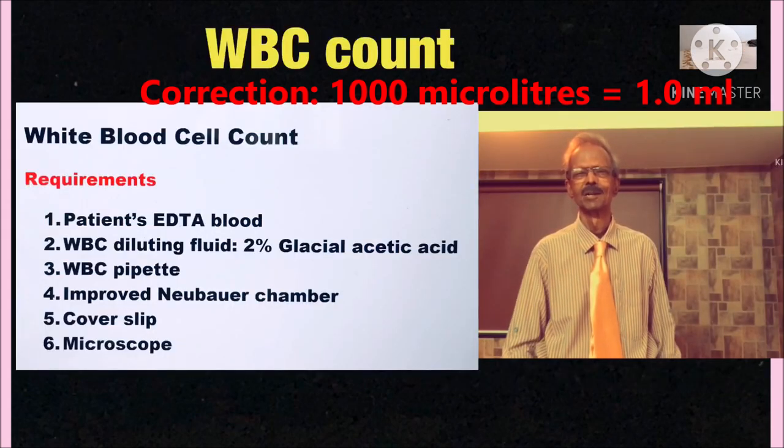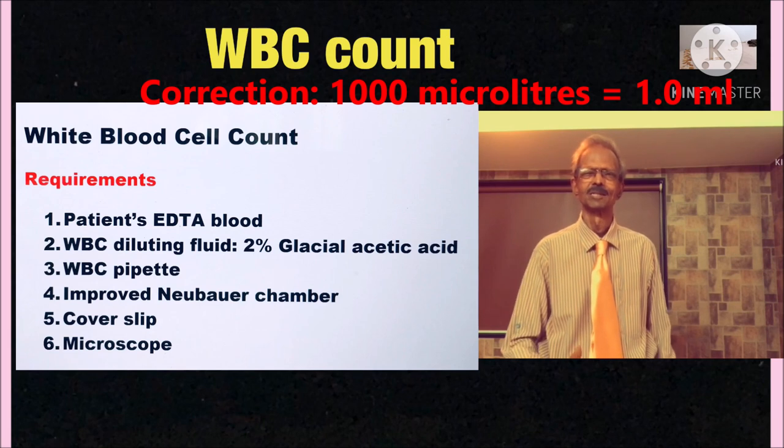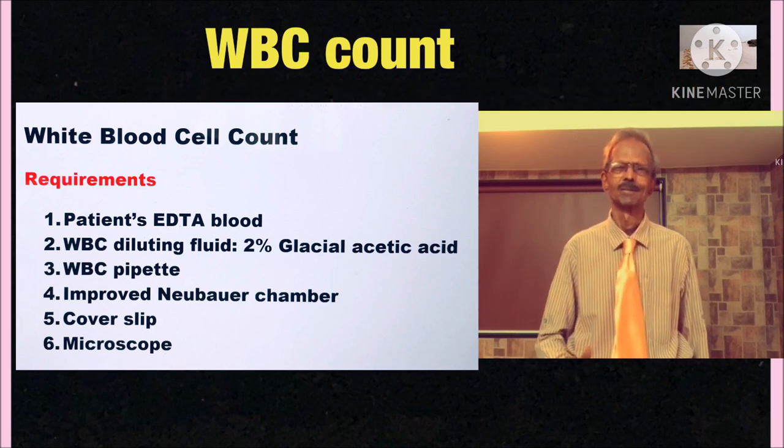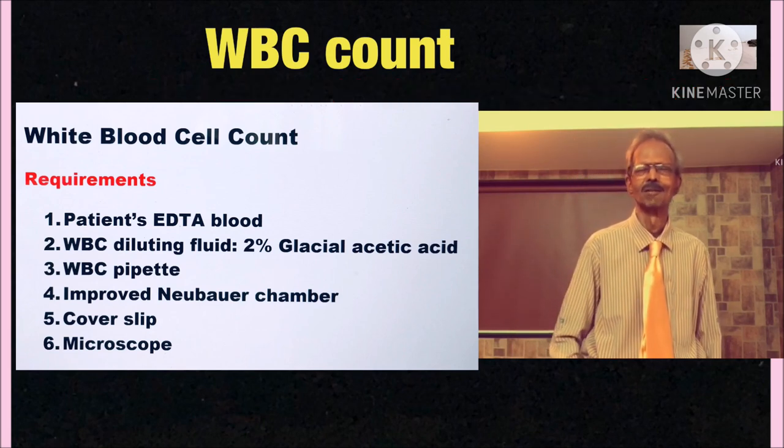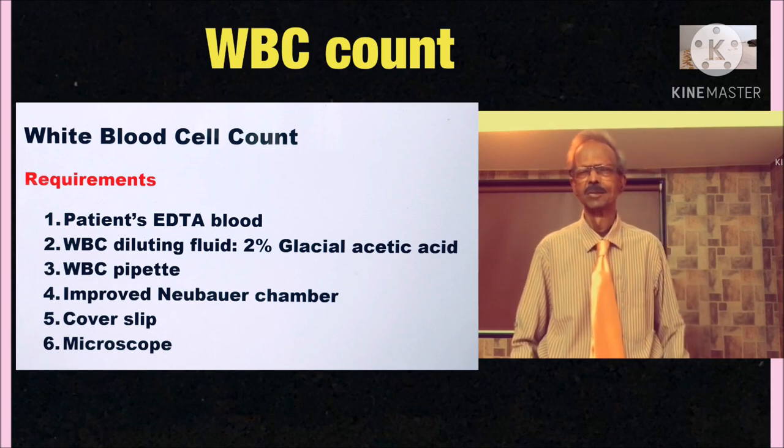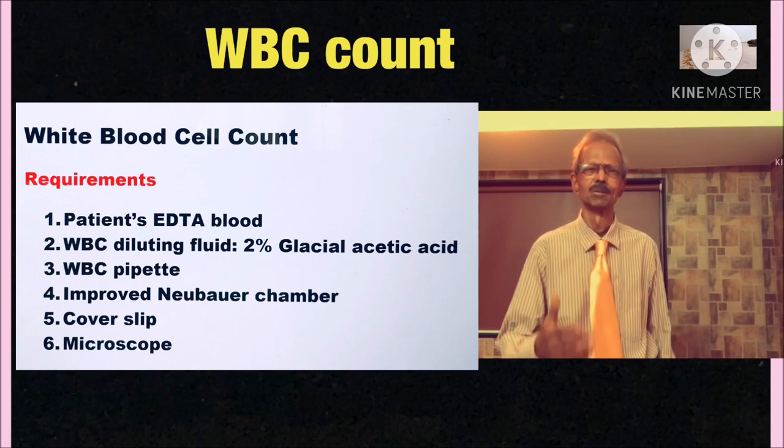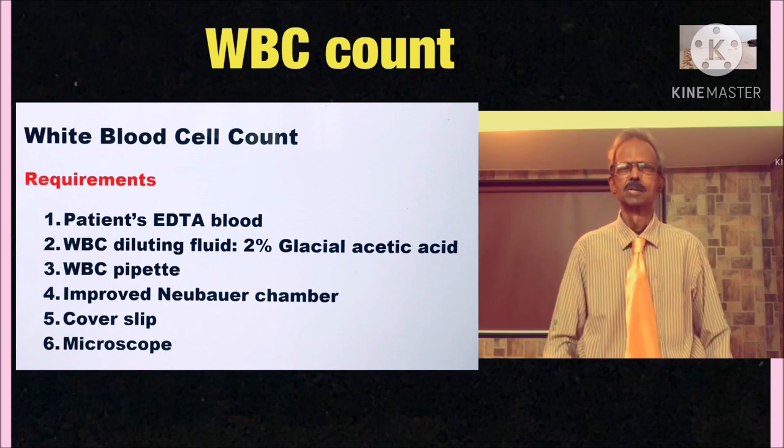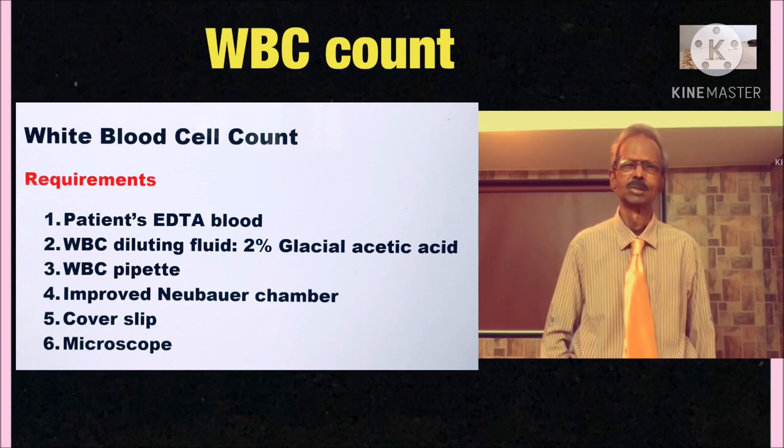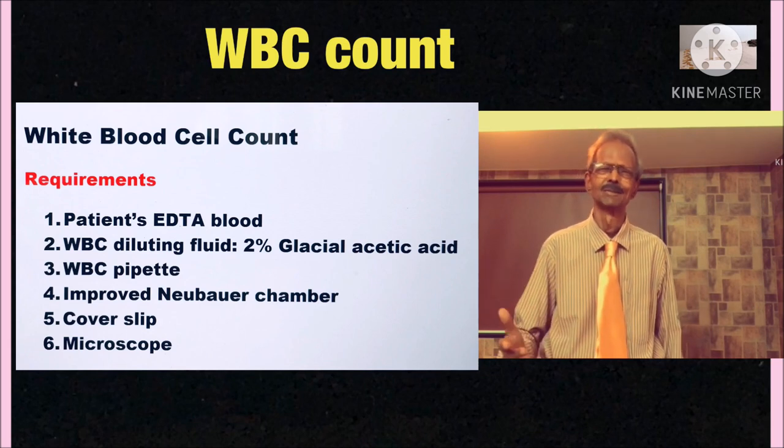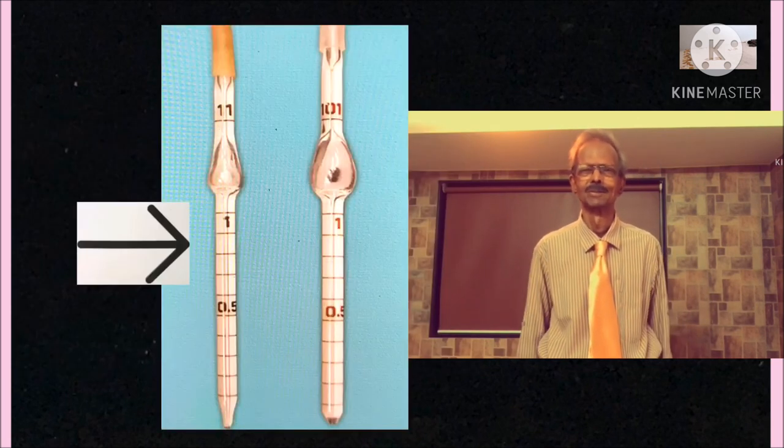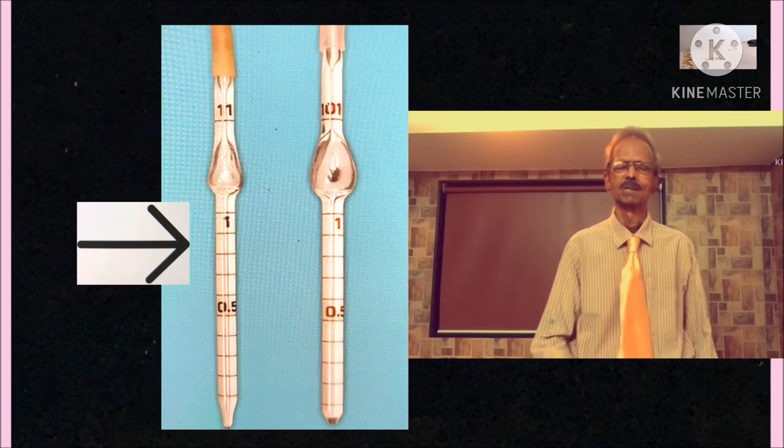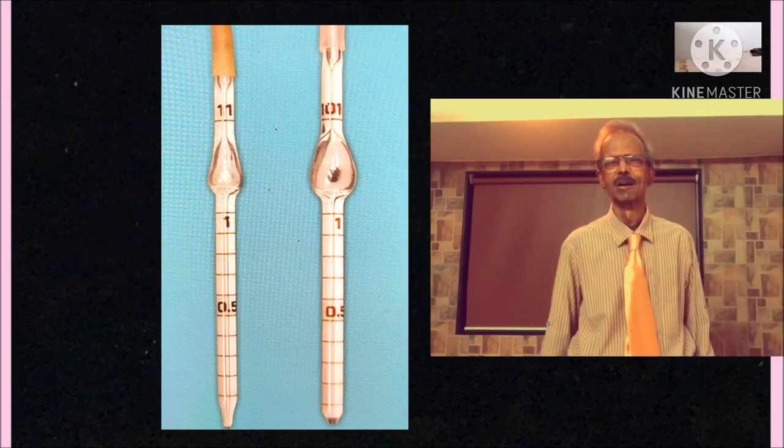Next experiment is determination of WBC count. And for this experiment the requirements are the same as for RBC count. Only thing is a WBC diluting fluid is used which is 2% acetic acid, and a specific WBC pipette is used as shown on the left hand side.